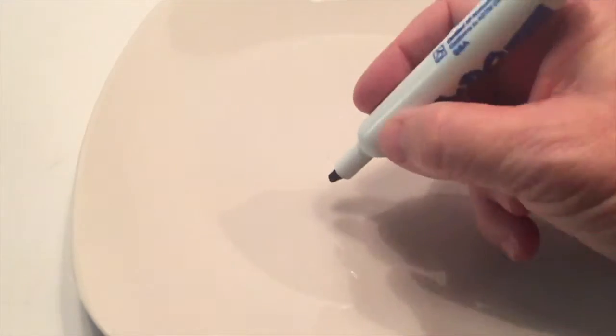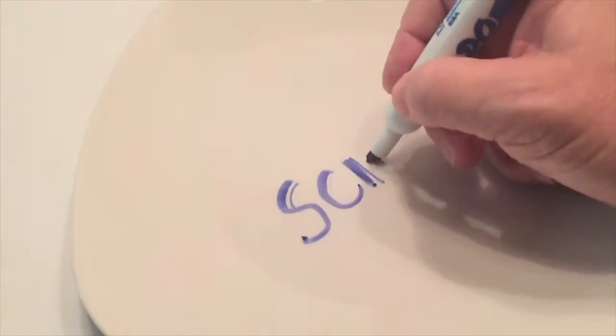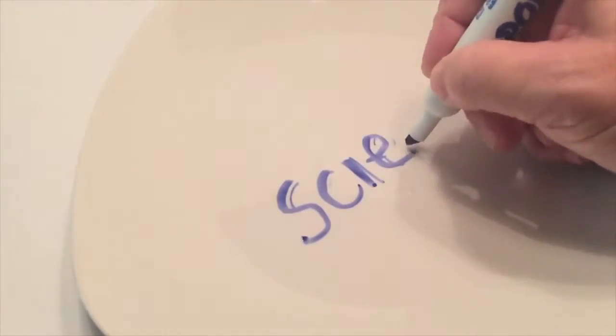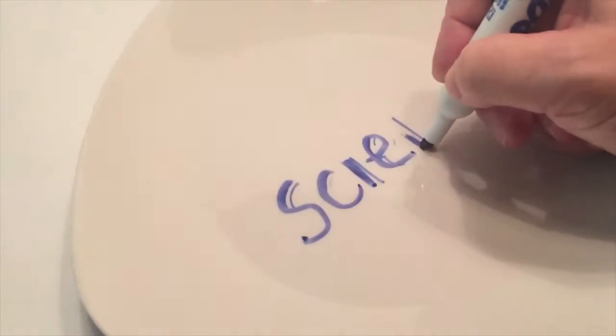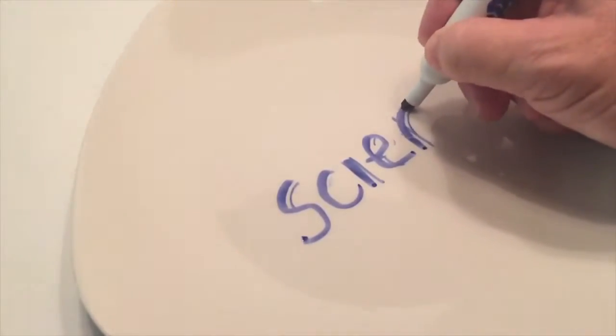So I did some research, and this is what I came up with. The science behind this is permanent markers like Sharpies rely on inks that have strong adhesive to stick to most of the surface they write on, right? So therefore permanent, and you can't get it off.